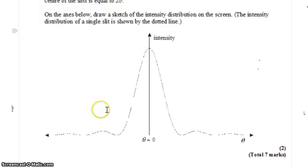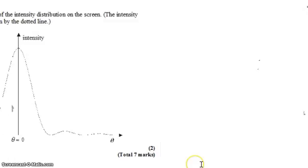We want to draw on this axis a sketch of the intensity distribution now. In dashed lines, we have the old intensity distribution when we had just one slit.